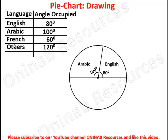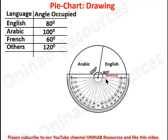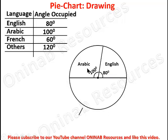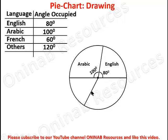We go ahead to draw the angle for French. Our line of reference is now this last drawn radius. We place the protractor so the zero line covers that radius and the center is maintained. We measure 60 degrees — counting 0, 10 to 60 — mark the line, remove the protractor, place the ruler, and join to the center and circumference. This 60-degree angle represents French.